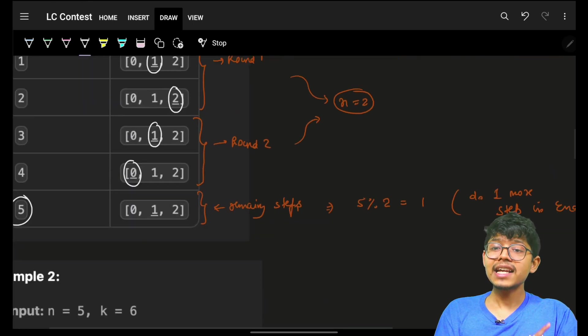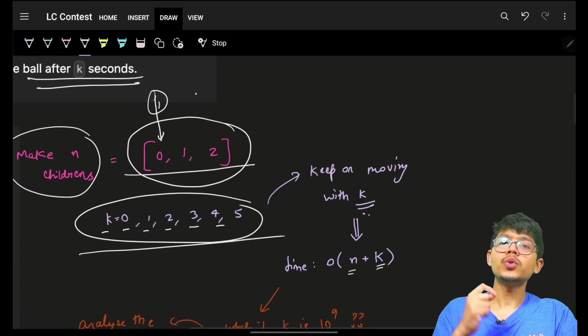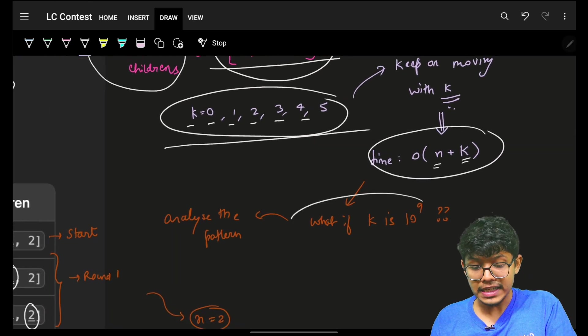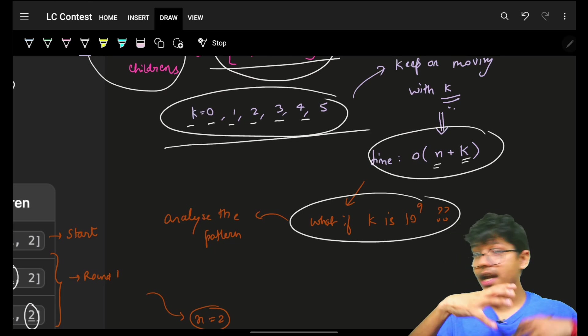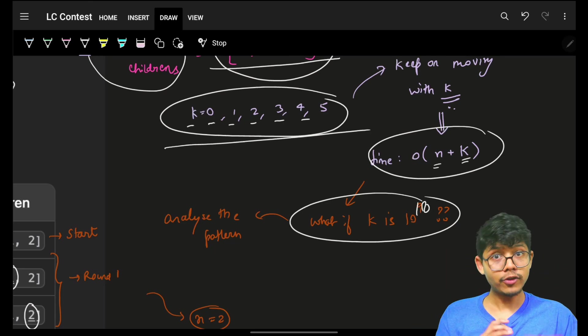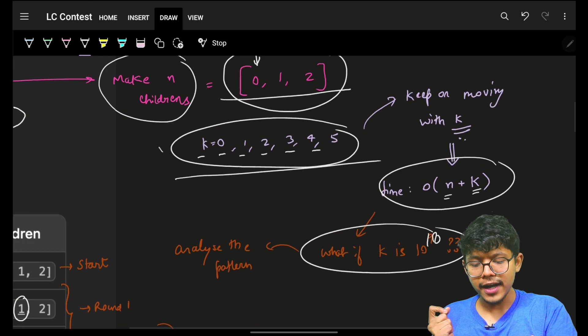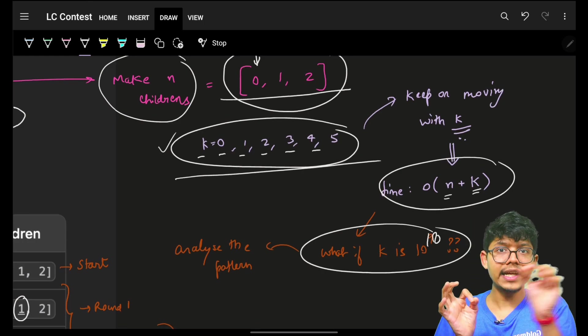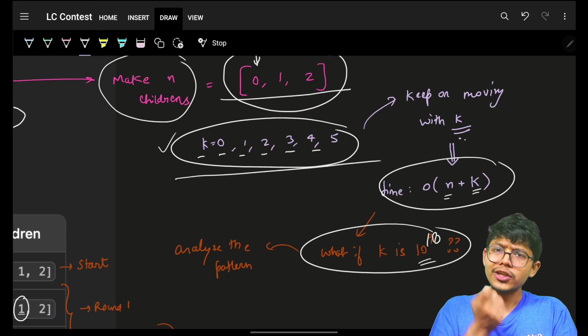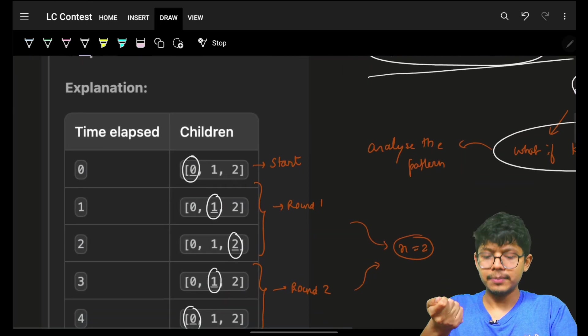But, in these kind of problems, the actual essence of the problem is when the k is very large, when the k is 1e9, that I have to keep on trying. It can be more than 1e18 also. I have to keep on trying. Thus, this kind of approach, in which you are moving the index, that will not work. In these kind of approaches, for sure, you can easily think that things are repeating.